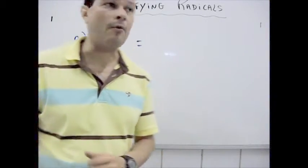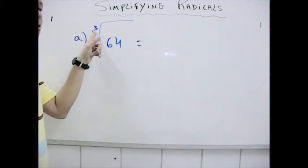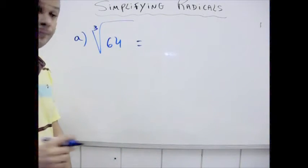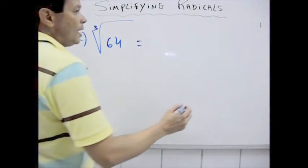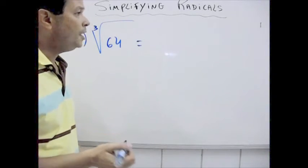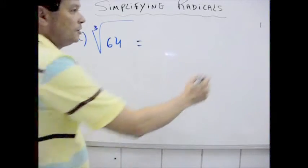Let's see the first example: cube root of 64. First of all, I'm going to decompose into factor, into prime factor, like this.